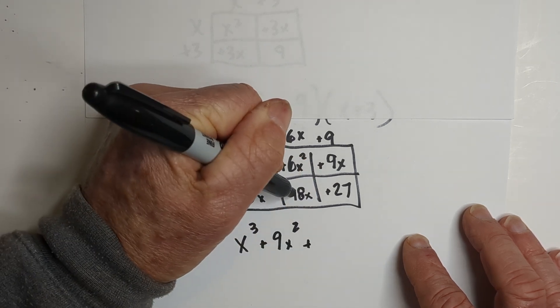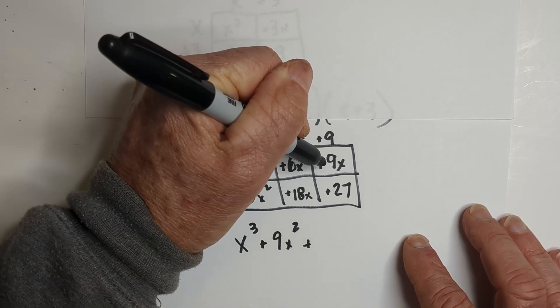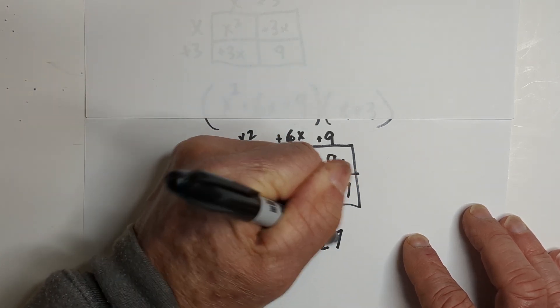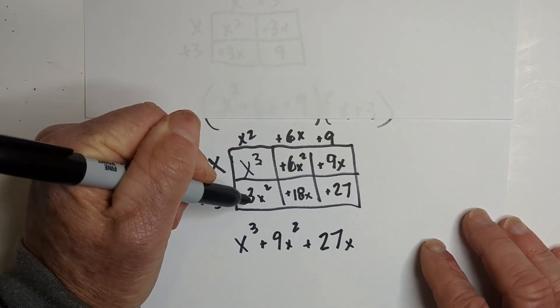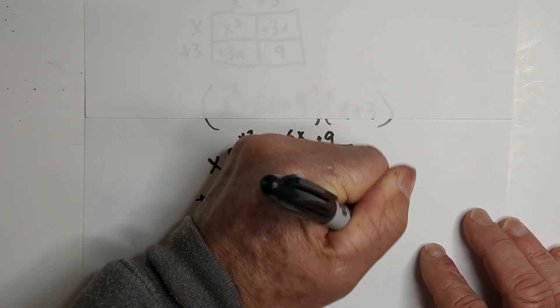Now we have 18x and 9x, and that is a positive 27x. And then we have a plus 27.